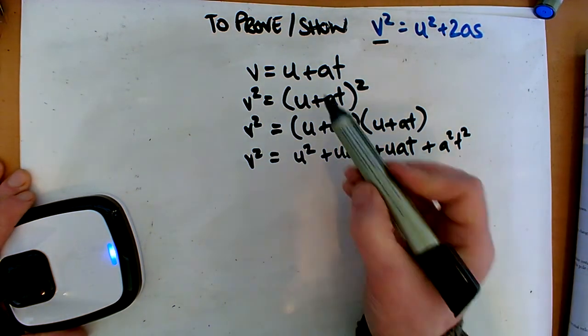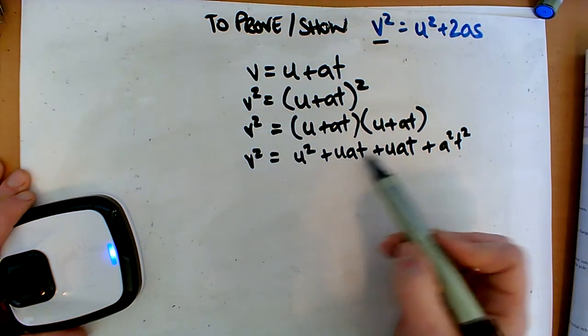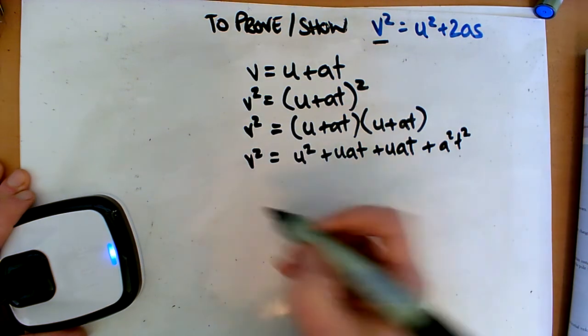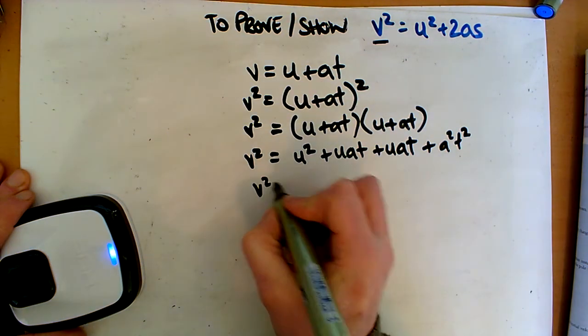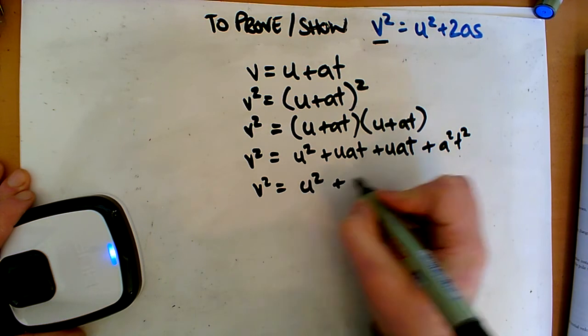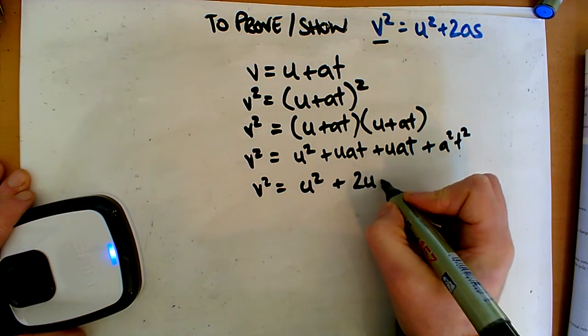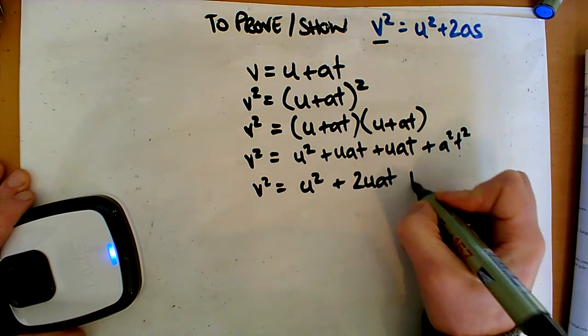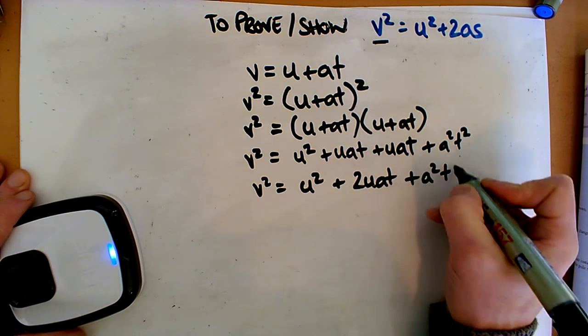Okay, so that's just it multiplied out. Now we can see that these are both the same, so we can add them together and make it a little bit neater. So we're going to have u² + 2uat + a²t².